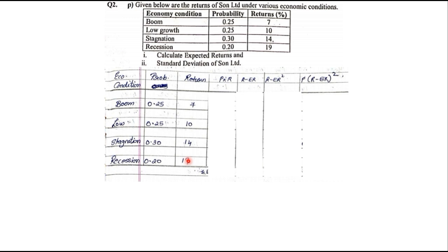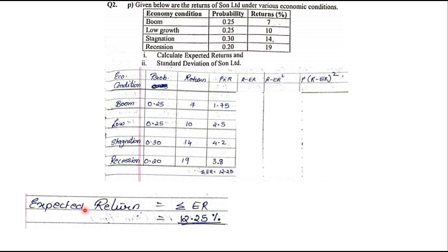To find the expected return, we need to find the P×R column by multiplying probability by return. So: 0.25×7, 0.25×10, 0.3×14, and 0.2×19, giving us 1.75, 2.5, 4.2, and 3.8. The total of these comes to 12.25. This summation is the expected return, so the expected return ER = 12.25%.